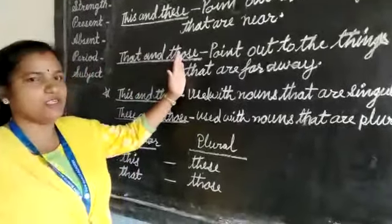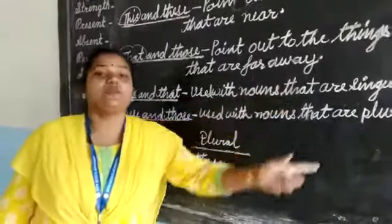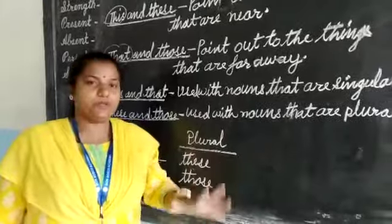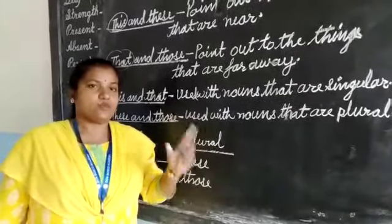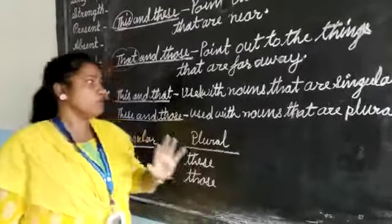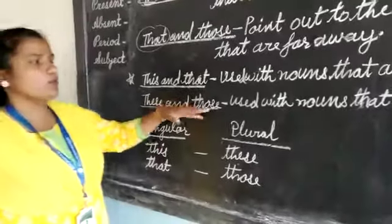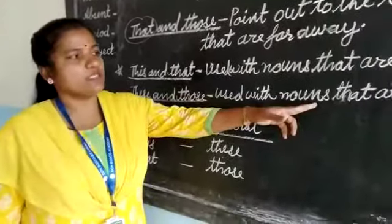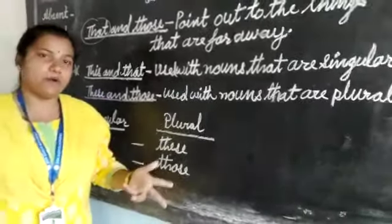This and that are used with the nouns that are singular — nouns, person, things, a place which is one in number. We use the adjective this and that. These and those are used with the nouns that are plural, more than one in number. Nouns which are plural, we use the words these and those.